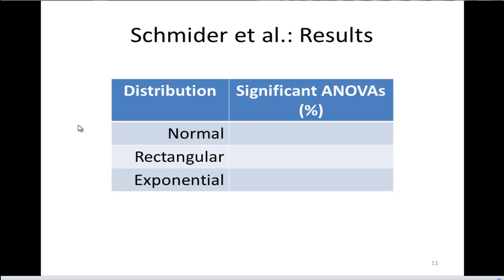So for a distribution that was normal, that was the first condition, significant ANOVAs equaled 5.14, which is equal to the alpha rate of 0.05. It's very close to what you would expect with an alpha of 0.05.